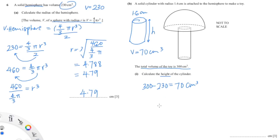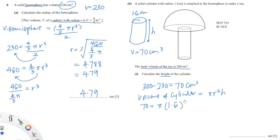So the volume of the cylinder is 70 cm³. The formula for the volume of a cylinder equals pi r squared times h, so that's 70 equals pi times 1.6 squared times h. Since we're finding h, we rearrange to get h equals 70 over (pi times 1.6 squared) and put that into the calculator.